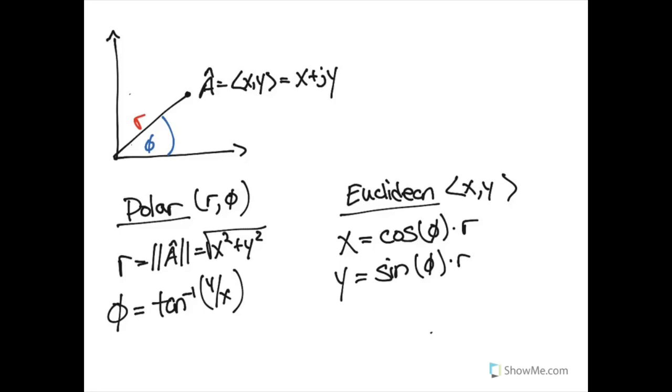We can bring this all back together on one giant final slide. Imagine that we have some sort of vector A in the two-dimensional space. It has two components to it, X, and a second component to it, Y.